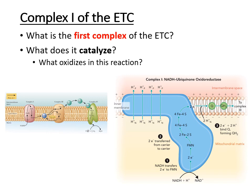The first complex of the electron transport chain is NADH ubiquinone oxidoreductase. It catalyzes the first step of the ETC: the transfer of electrons from NADH to coenzyme Q, also known as CoQ or ubiquinone. The name of the complex reflects this transfer — electrons going from NADH to ubiquinone.